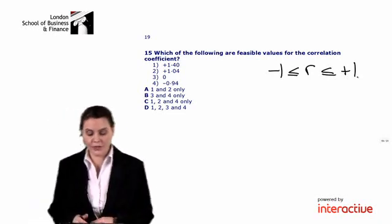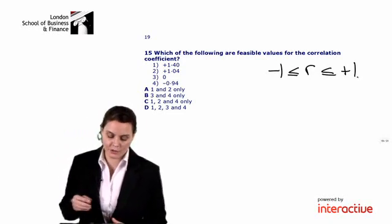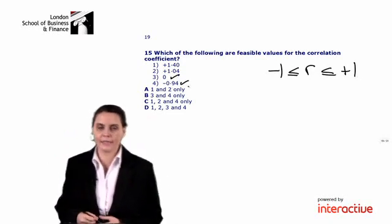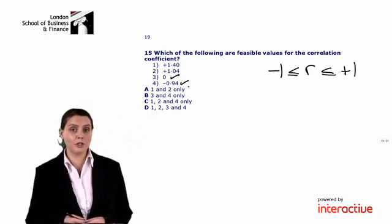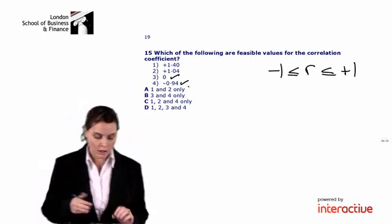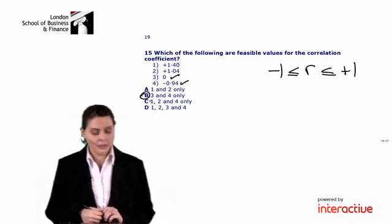Which means in our list of options, the only feasible values for the correlation coefficient are zero and minus 0.94. Options one and two fall outside of our possible range. So the correct answer then is B.